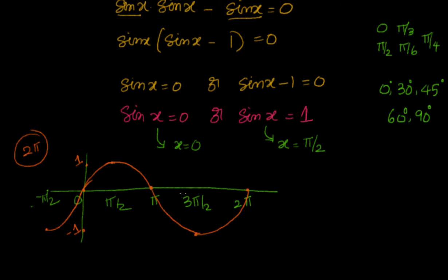So if somebody says sin x = 0 and I say x = 0, they can come back and tell me x = 2π also satisfies it, or x = 8π. You see that x = 0, π, 2π, 3π, 4π — all multiples of π — give sin x = 0. That means saying x = 0 is not enough; I should be able to specify all the values.